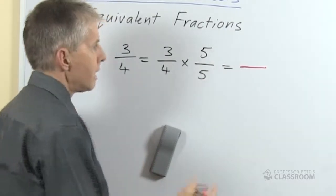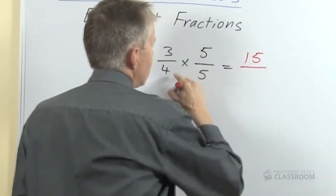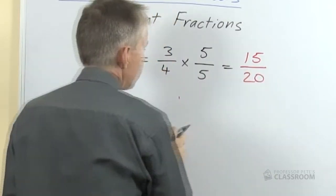And assuming they know the method or you could quickly explain it to them, if we multiply the top two numbers we'll have 15, multiply the bottom two numbers we'll have 20.